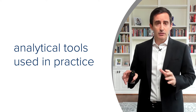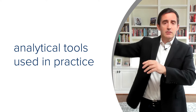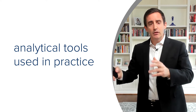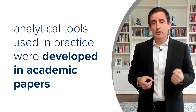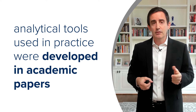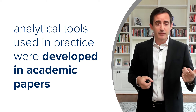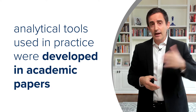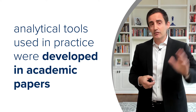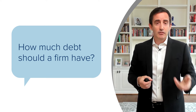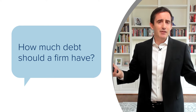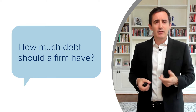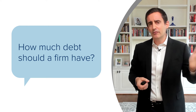We didn't come about these tools by professors observing what people do in practice and writing books about it. The tools were actually developed in academic papers, where financial economists provided analytical solutions to different types of economic problems that firms face. Some examples of questions academic economists were trying to answer — and in some cases people won Nobel Prizes for solving — include: how much debt should a firm have? One of the big questions we'll discuss is how a firm should finance itself. Does it even matter if you use debt or equity? And if it does matter, is there some optimal amount of debt you should have?